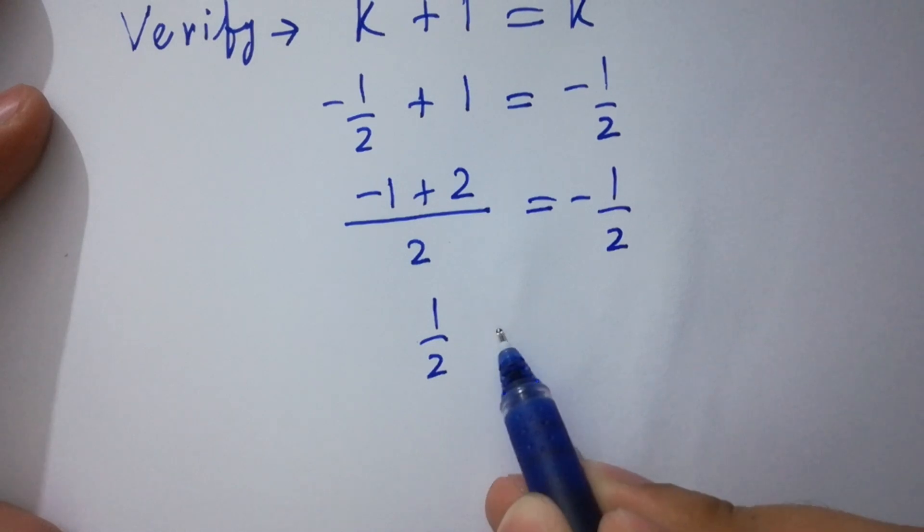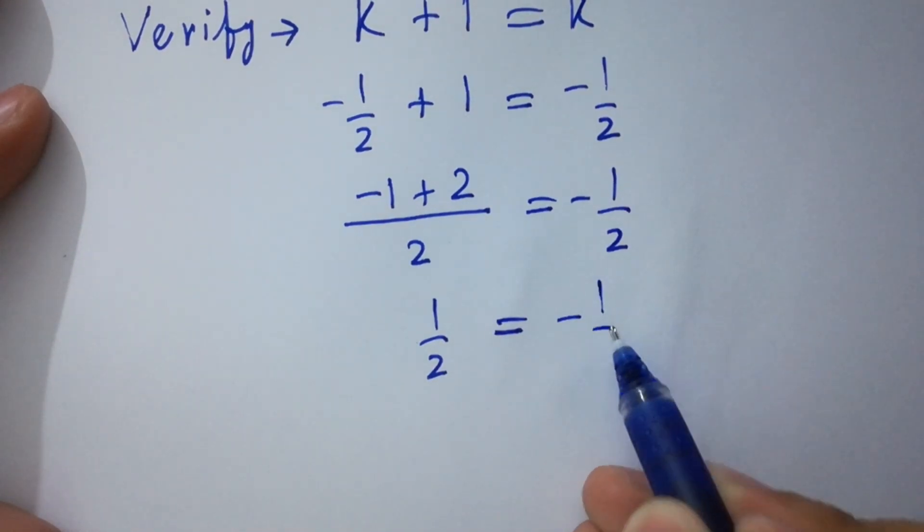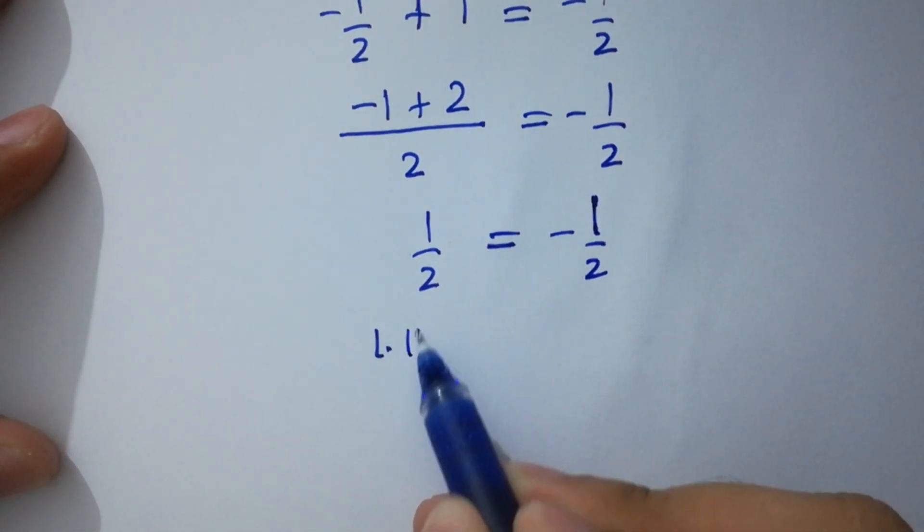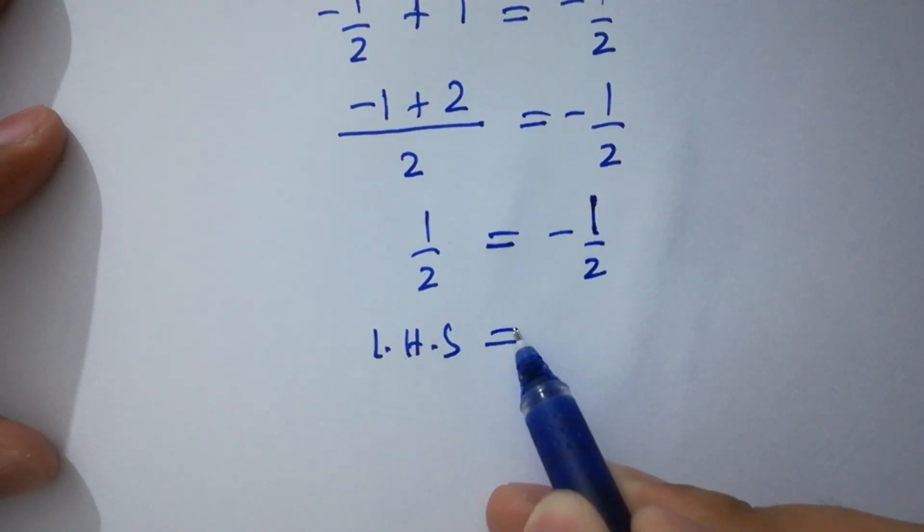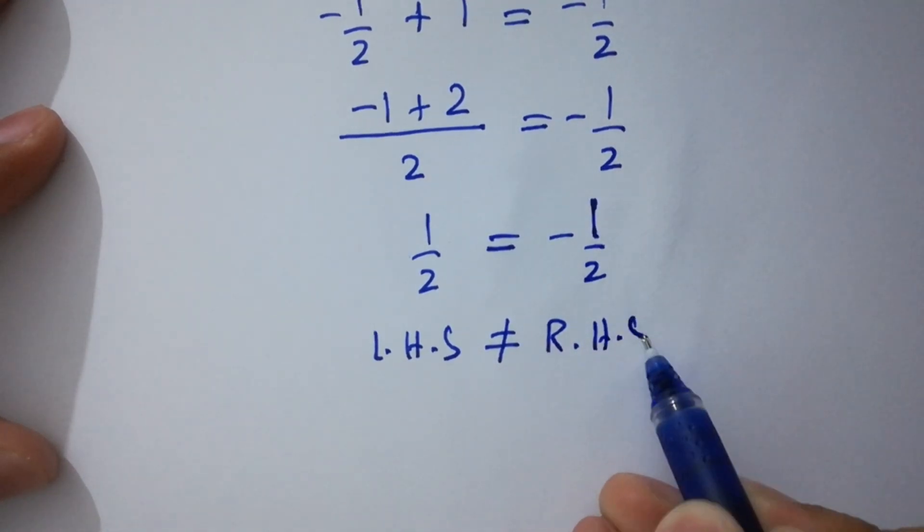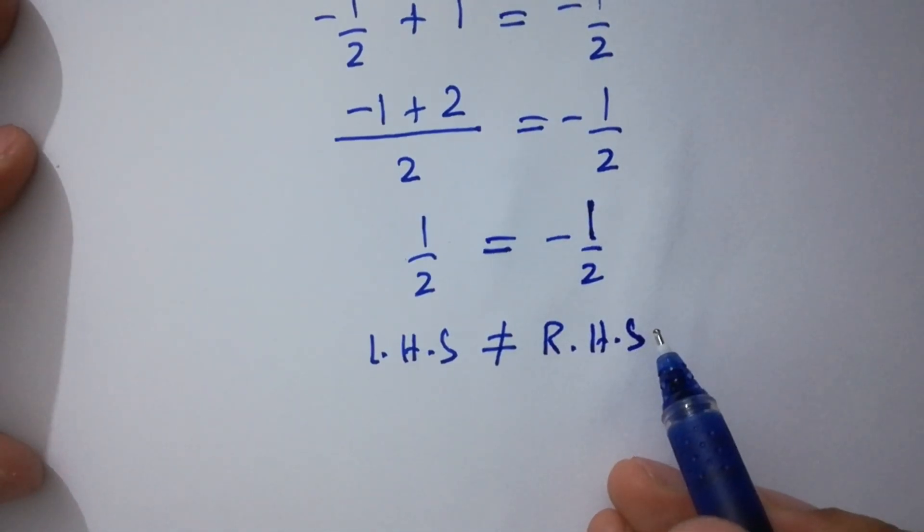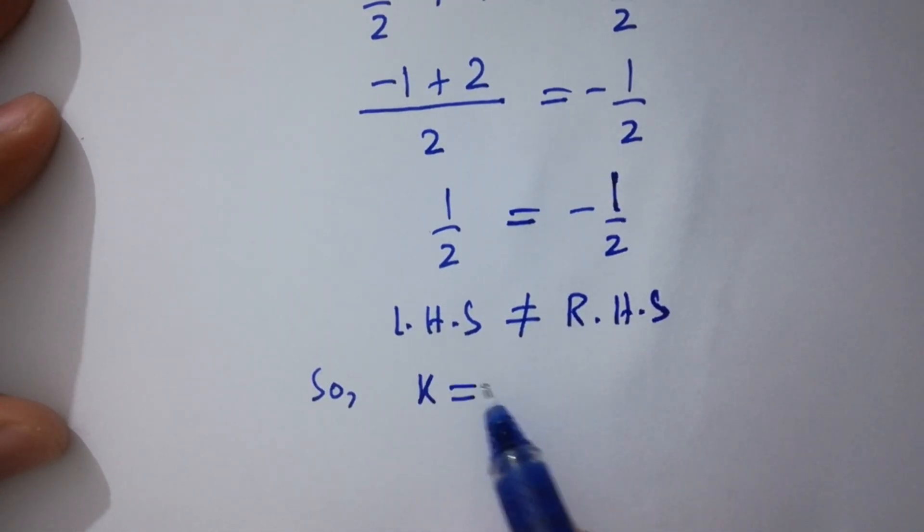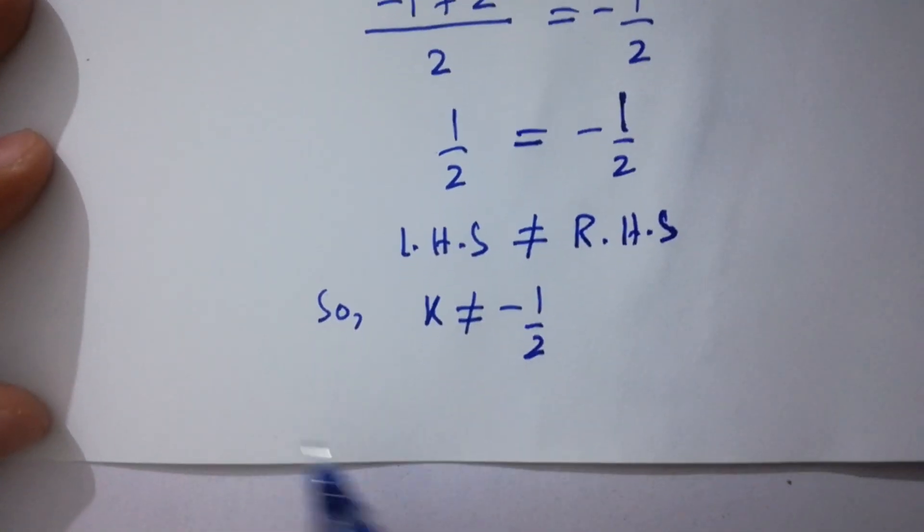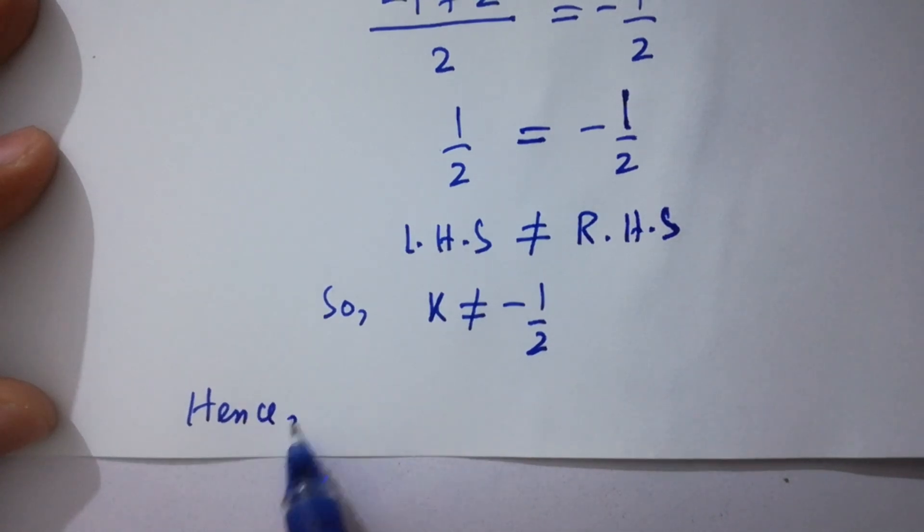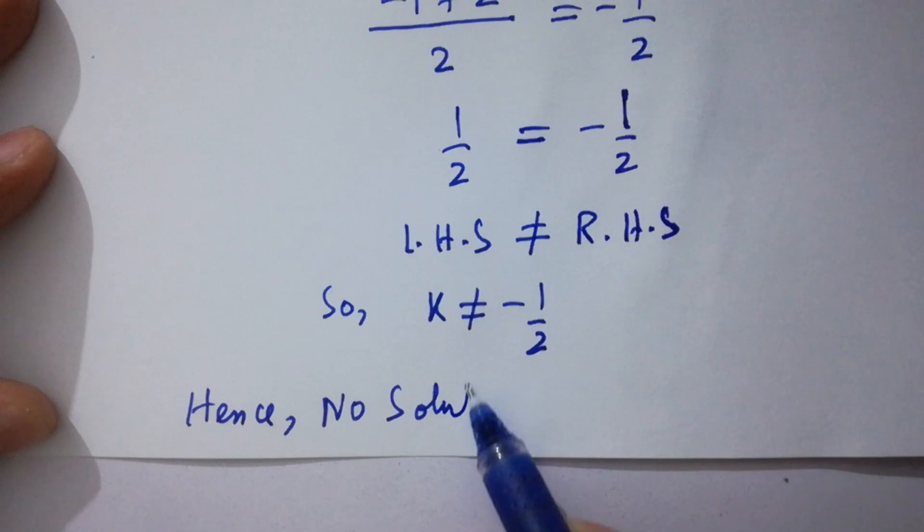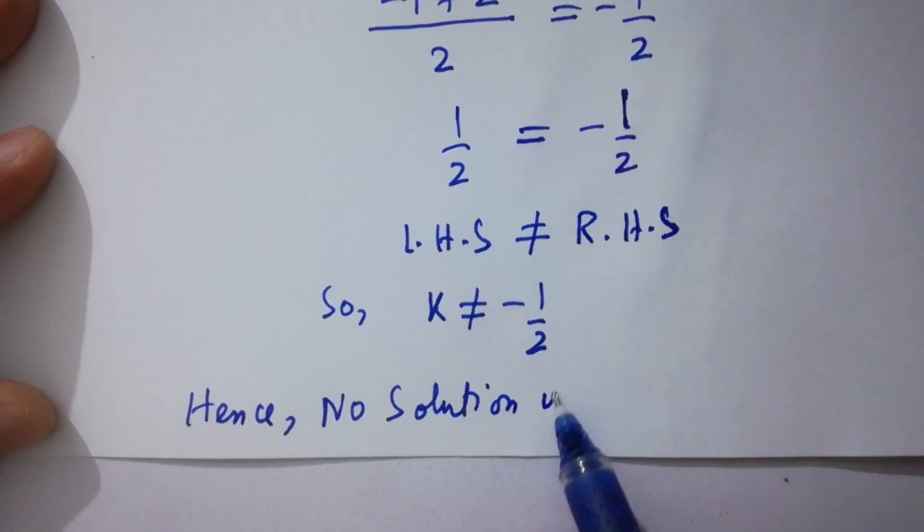1 over 2 equal to minus 1 over 2. So you can see, left hand side does not equal to right hand side. So k does not equal to minus 1 over 2. Hence, no solution is possible.